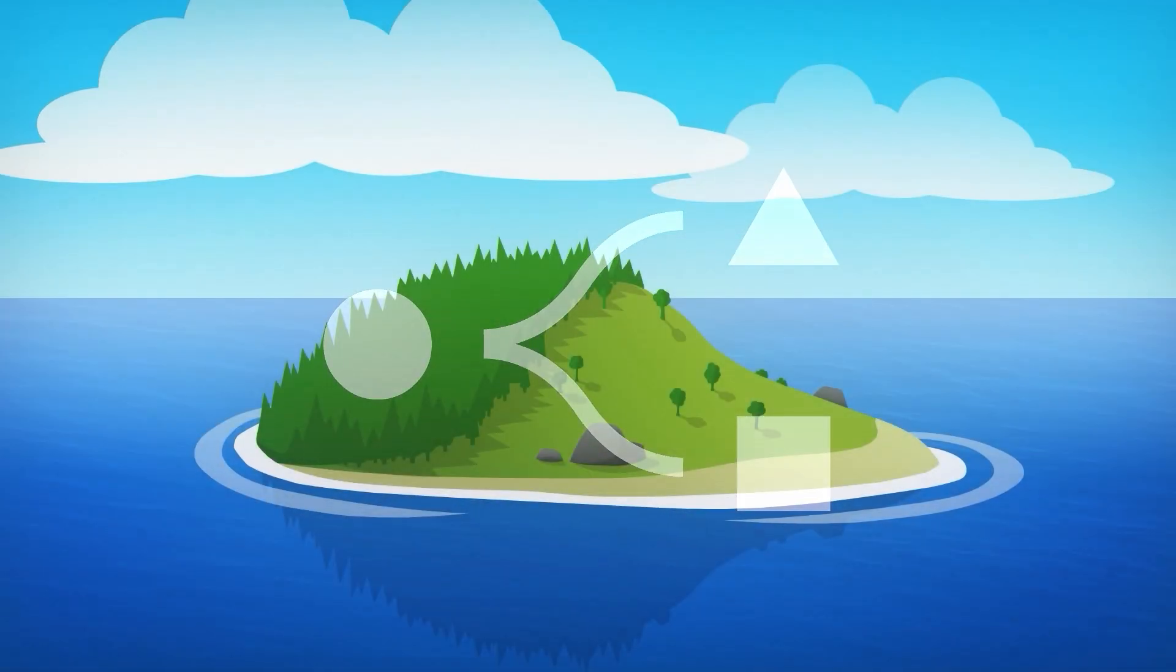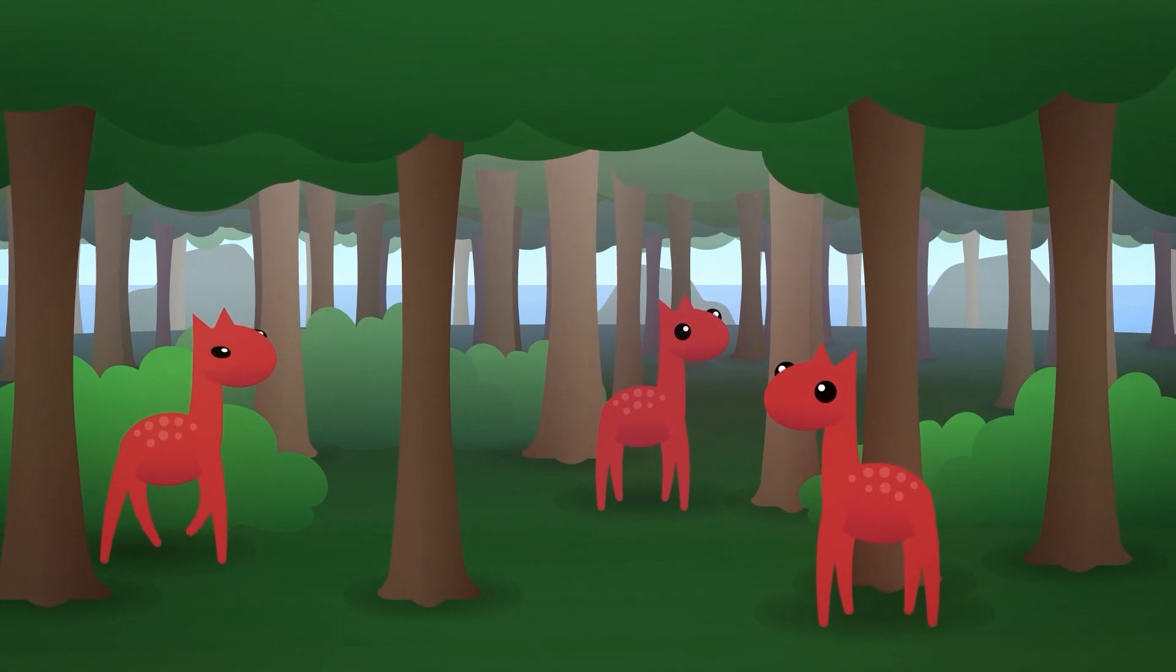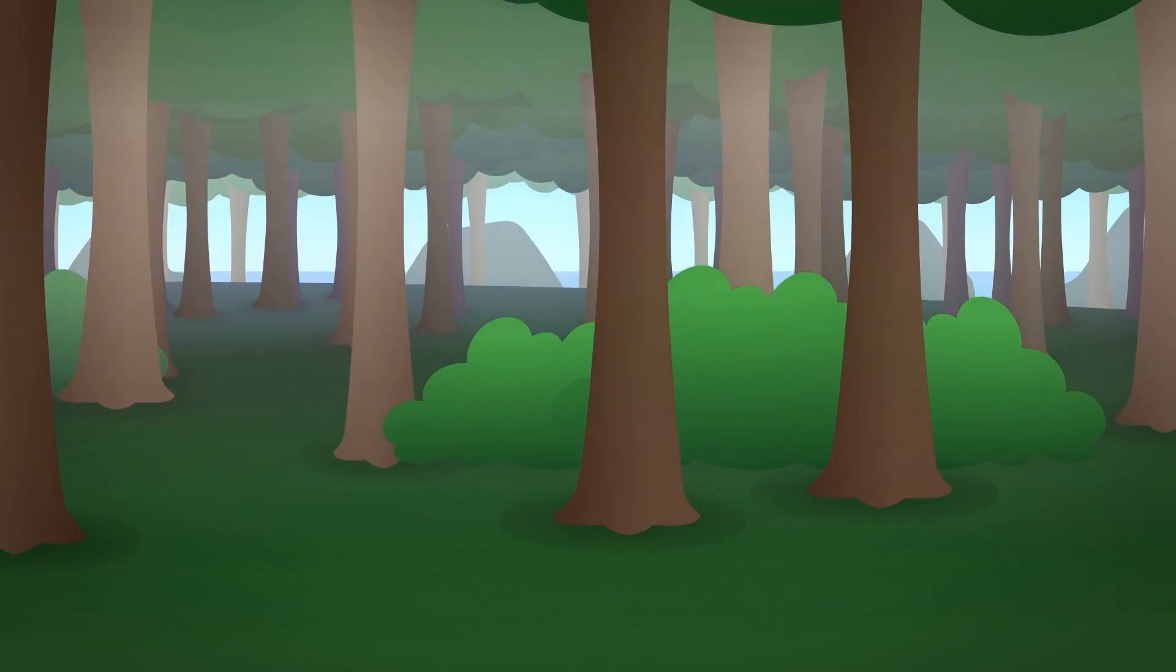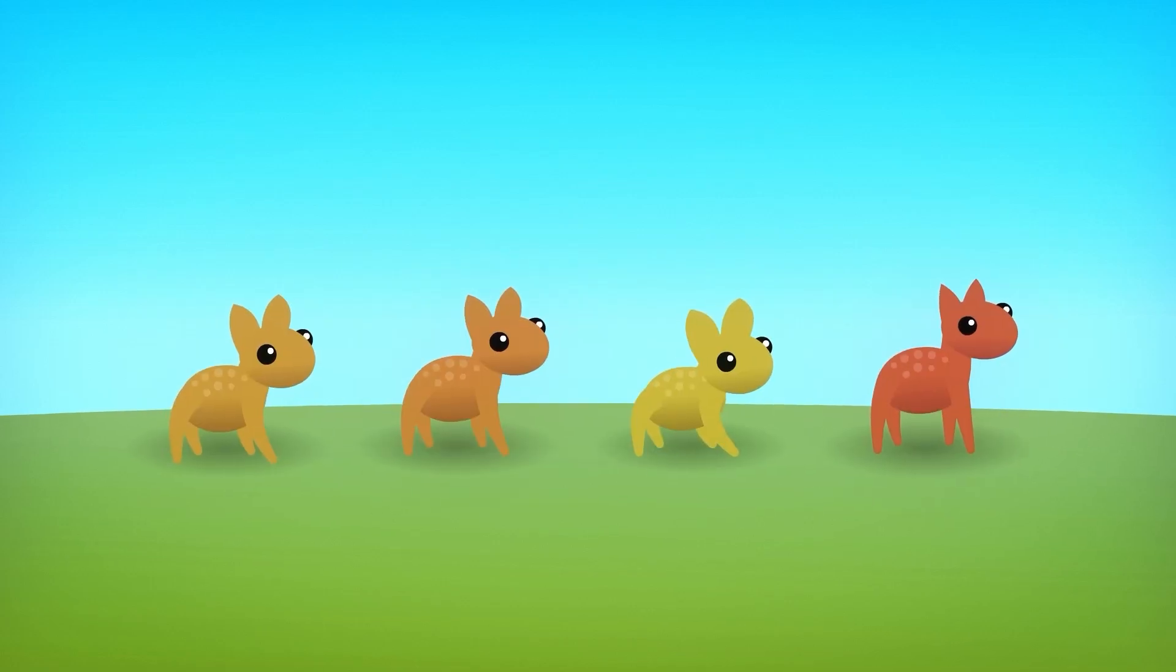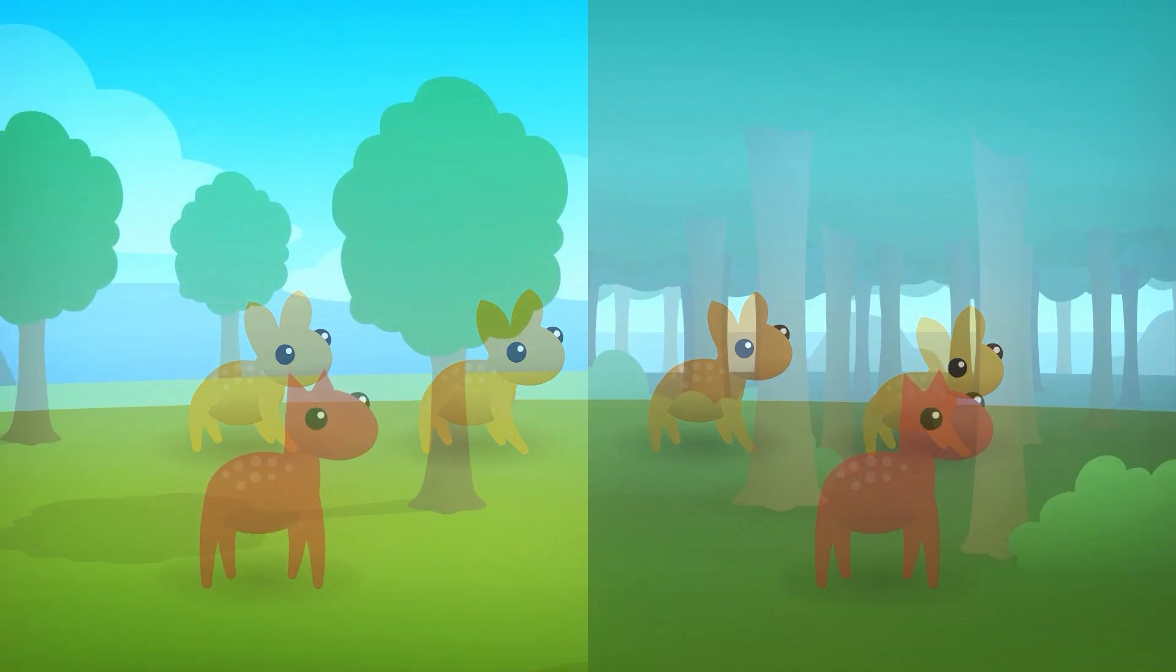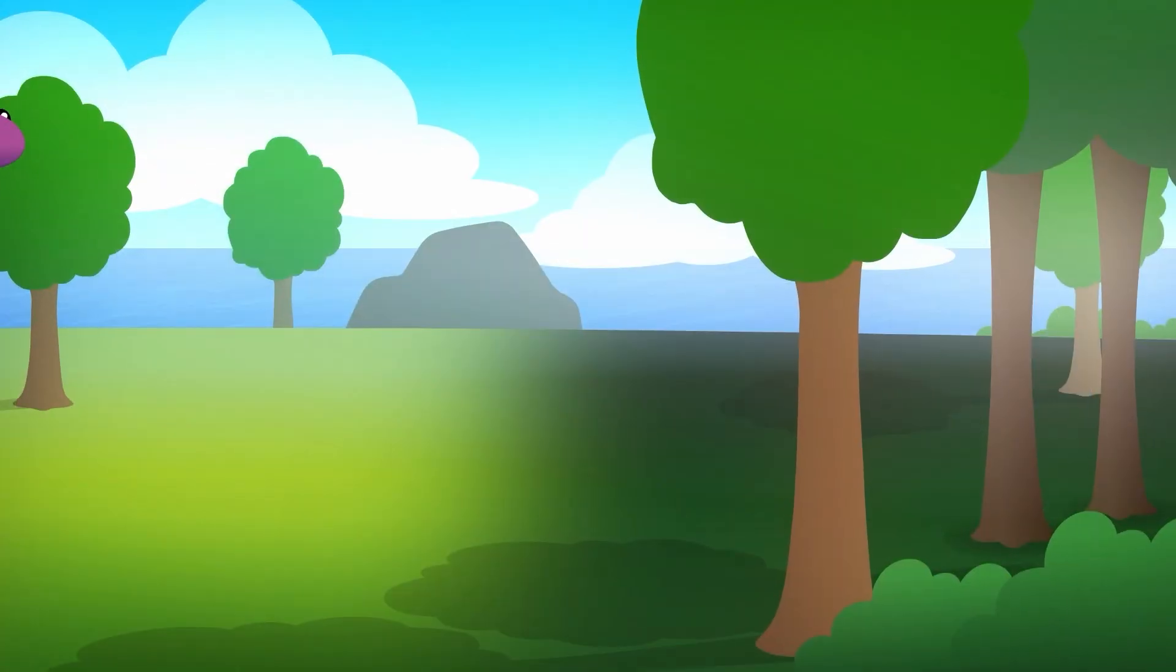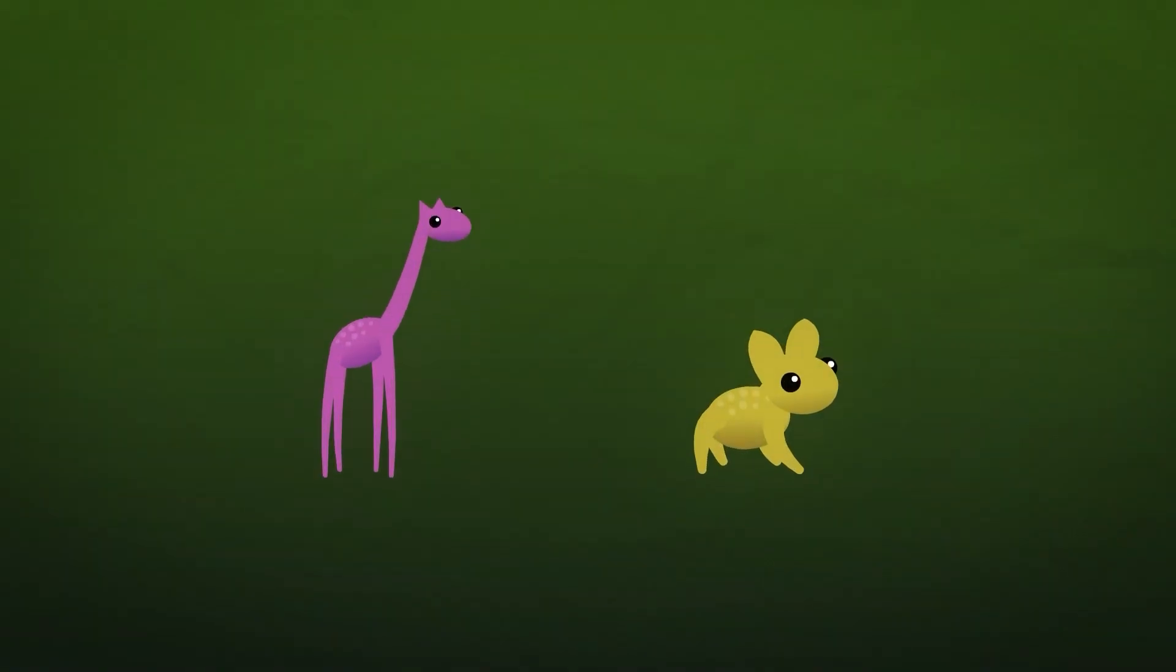So far we have seen how a population changes over time. But the theory also helps us understand the existence of different species. Let's go back to the island. Suppose that before the population evolved to be tall, a small group migrated to the other side of the island and found a forest abundant with food. But there were also predators in the forest, and only the small and agile creatures managed to elude their jaws. Over generations, the creatures became smaller, their hearing sharpened, and they adopted new patterns of behavior. The different environmental pressures on either side of the island led to very different developments. After millions of years of evolution, the animals on both sides look completely different, and productive breeding between them is no longer possible. In other words, they are two separate species that share a common ancestor.